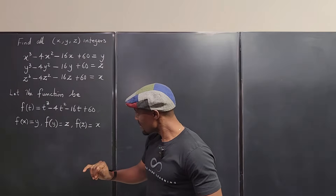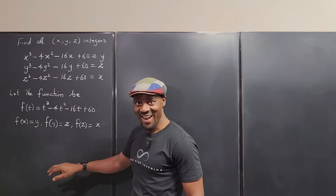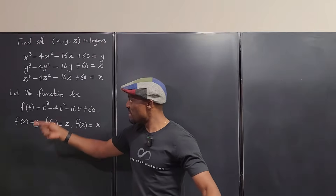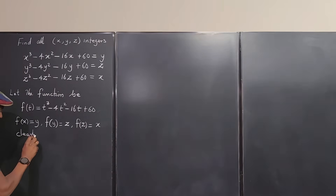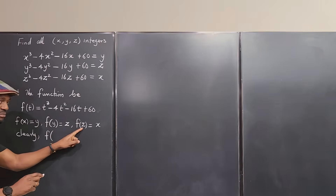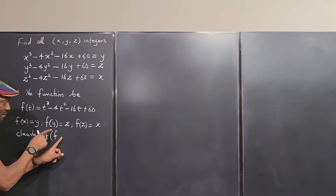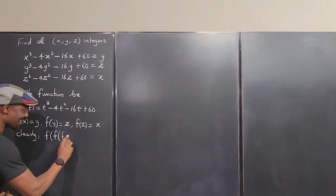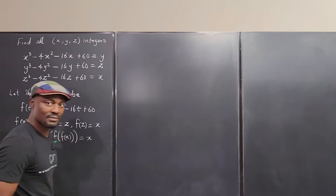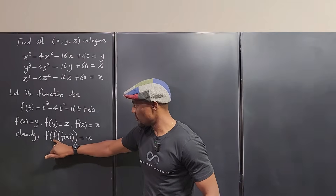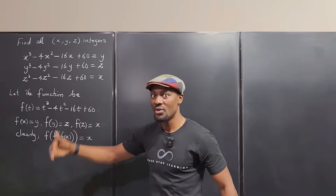Instead of putting y here, we can put f of x in place of y. So if you start from x and repeat the process three times, you end up at x again. We can write f of f of f of x equals x. The fact that you start from x, apply the function three times, and come back to x means that x is a periodic point of f.